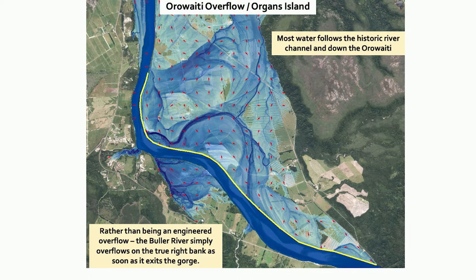Rather than being an engineered overflow, the Buller River simply overflows on the true road bank as soon as it exits the gorge. Most of the water actually follows the historic channel — the original channel of the Buller River before it was diverted — and then flows down the Orawaiti.